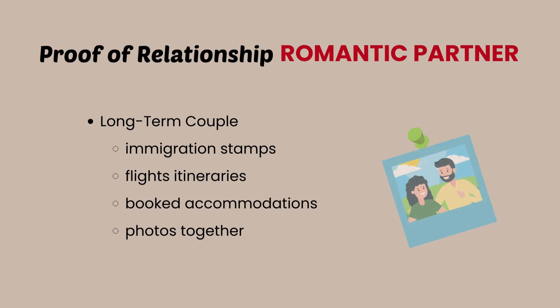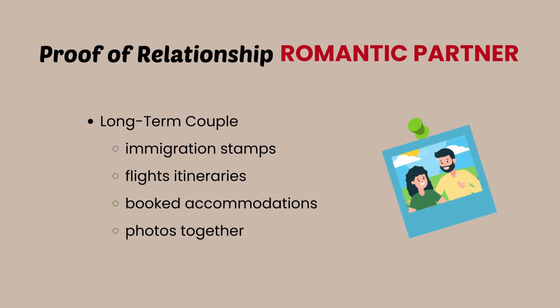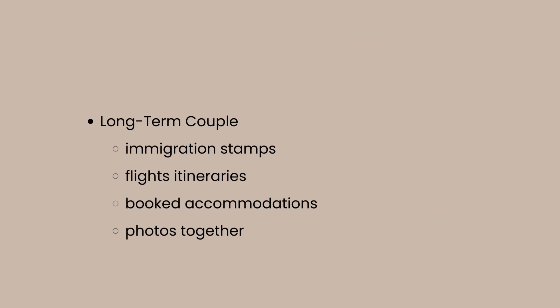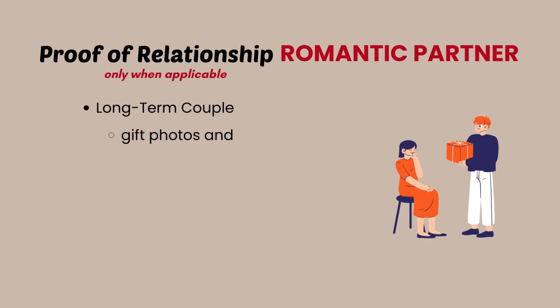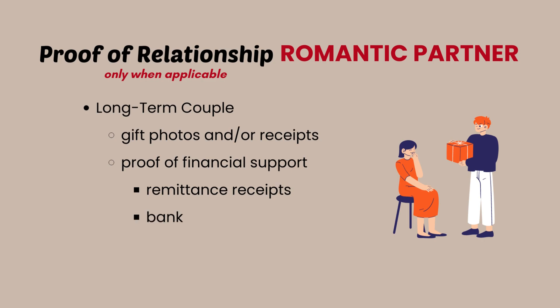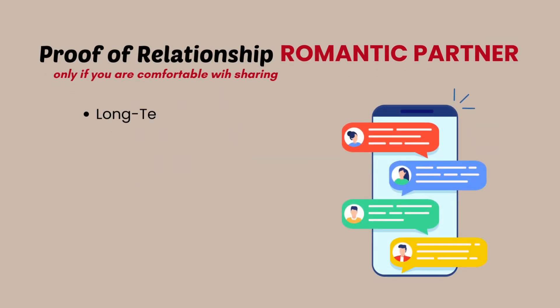And of course, if you and your partner are willing, you can also include your photos together. The next set of documents is optional for me — I did not submit these because we didn't have them or because we were too private. First off would be gift photos and/or receipts: if you or your partner have been exchanging gifts on several occasions, you can include a photo of those gifts. Also, if your partner is financially supporting you, then you can include a copy of the remittance receipts or the bank transfer.